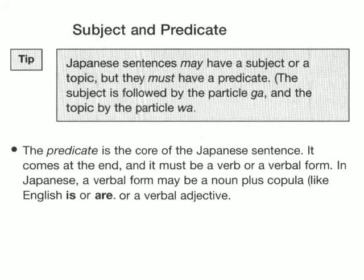Subject and Predicate Tip: Japanese sentences may have a subject or a topic, but they must have a predicate. The subject is followed by the particle ga and the topic by the particle wa. The predicate is the core of the Japanese sentence. It comes at the end, and it must be a verb or a verbal form.